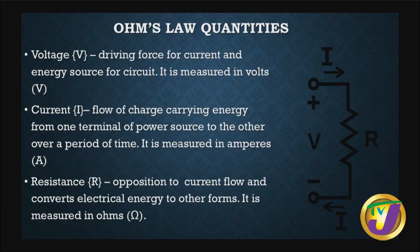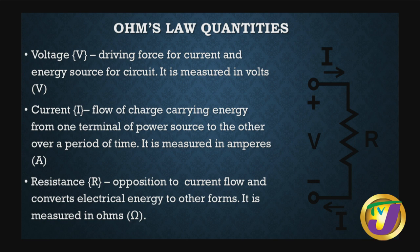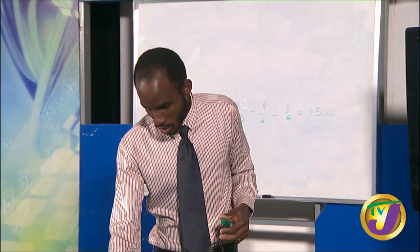The Ohm's Law quantities: Voltage is the driving force of current and energy for an energy source for circuits, measured in volts. Current is a flow of charge carrying energy from one terminal of a power source to the other over a period of time, measured in amperes. Resistance is the opposition to current flow — as it converts electrical energy to other forms — and is measured in ohms. The symbol for voltage is V, current is A (amperes), and resistance is the Greek symbol omega. Greek symbols are regularly encountered in physics.